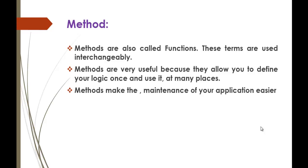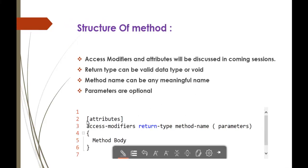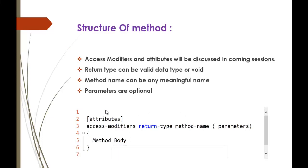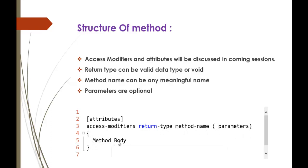Now the structure of a method. This is the typical structure of a method. It contains access modifiers, then return type, then method name, then parameters — which are optional — and the method body. Whatever you write within the braces is the method body.